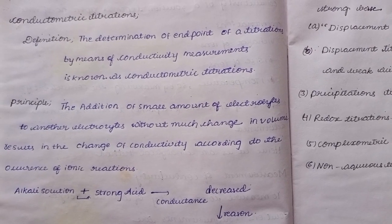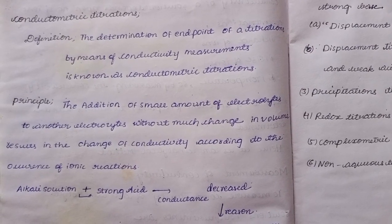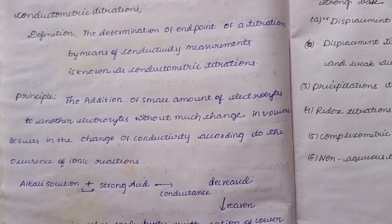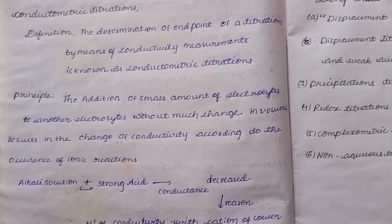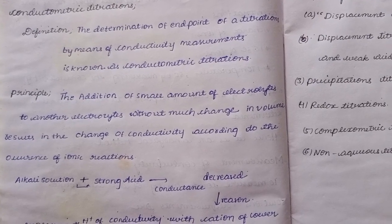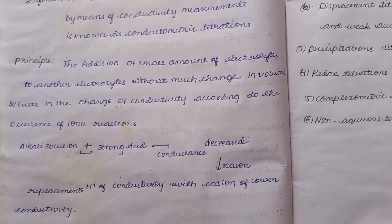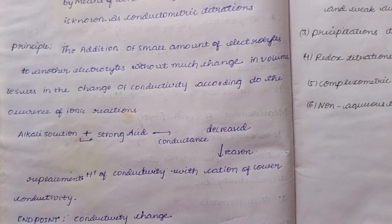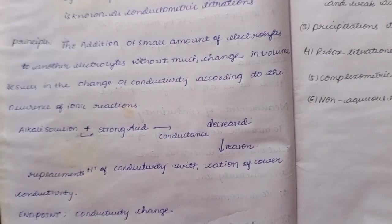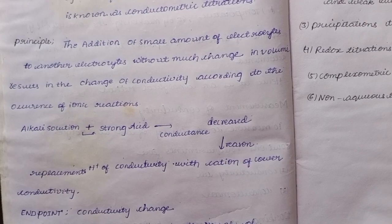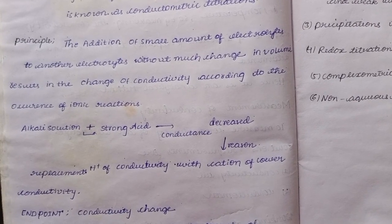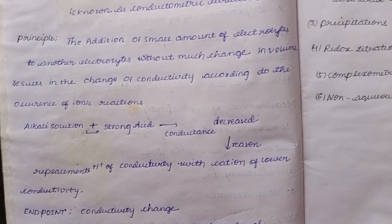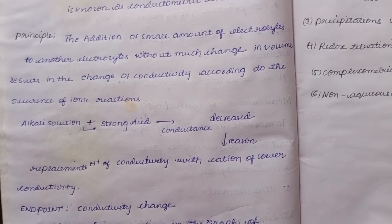The determination of the end point of a titration by means of conductivity measurements is known as conductometric titration. The principle is: the addition of a small amount of electrolyte to another electrolyte without much change in volume results in a change of conductivity according to the occurrence of ionic reactions.